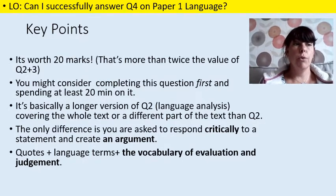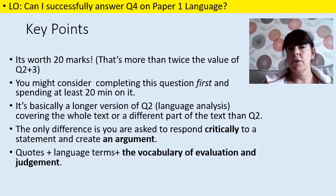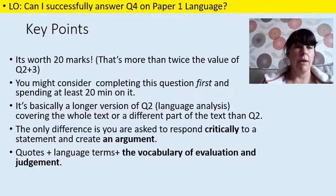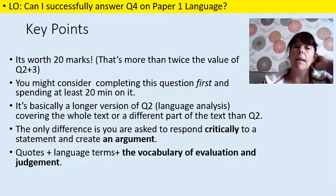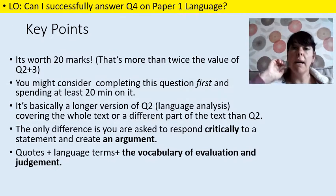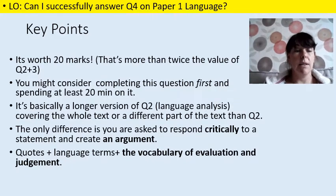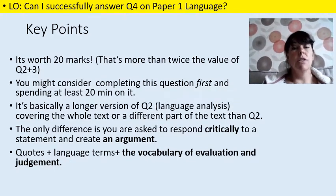Key points for question 4 to remember: it's worth 20 marks and that's a big deal. It's a 40 mark paper, so this is worth all the same marks as all the other questions combined — half the marks on the reading paper. We do sometimes advise students to tackle this question first. If you have problems with timing in an exam and you sometimes run out of time and you do that for question 4, it's absolutely catastrophic if you're losing that many marks.